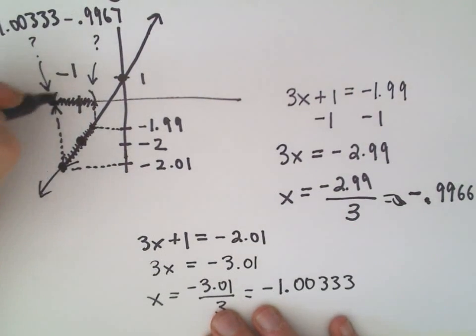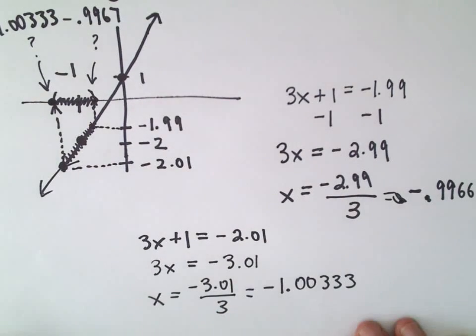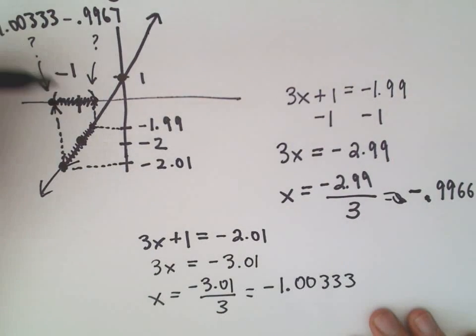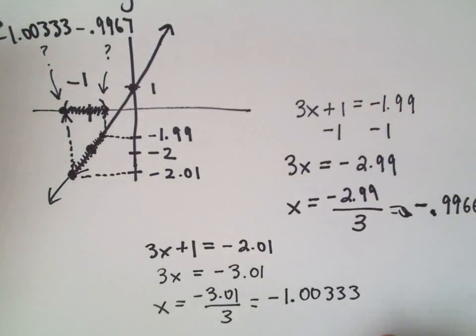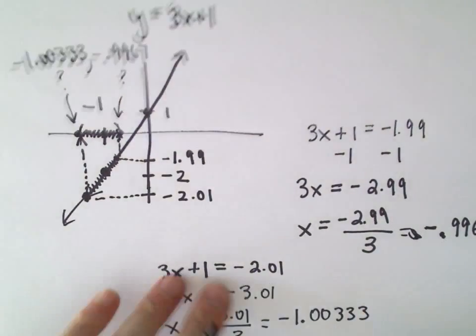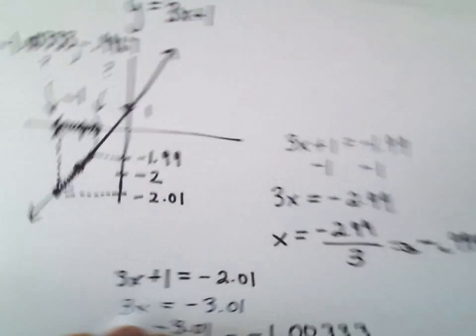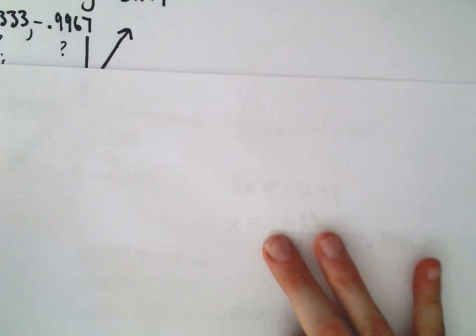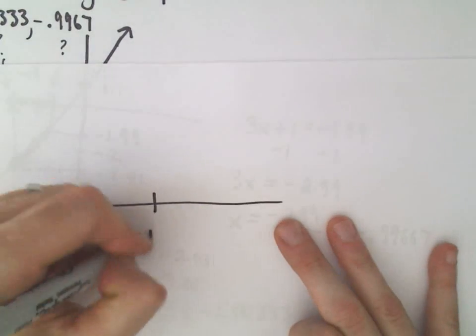Okay, so now I've got my two x coordinates. They're basically going to be the exact same distance away from the number negative 1, just because our function, in this case, is a linear function. So again, what have we got here? Let me make the picture maybe a little bit bigger. So on the x axis, here's negative 1.